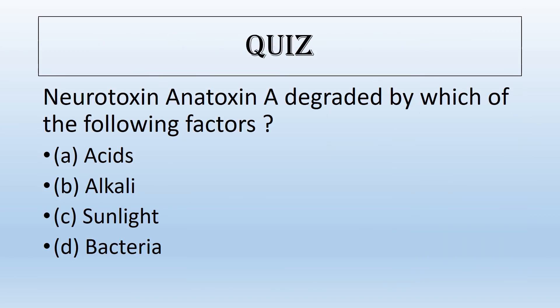The neurotoxin Anatoxin A is also called 'very fast death factor' because, unlike other toxins such as microcystin, Anatoxin causes rapid death. The answer to the quiz is that Anatoxin A is degraded by option B (alkaline water), option C (sunlight), and option D (bacteria).